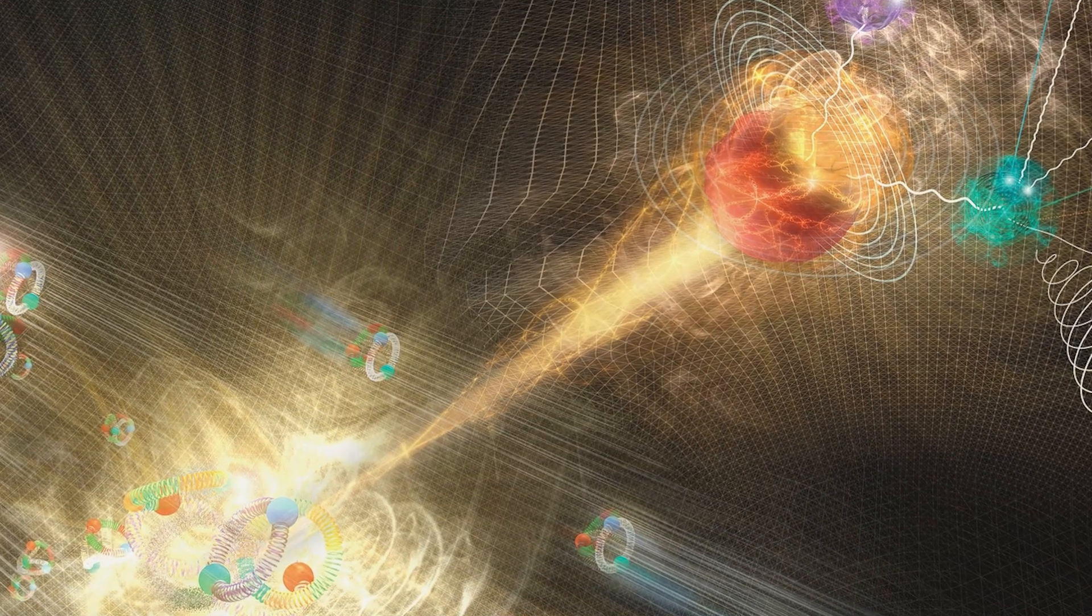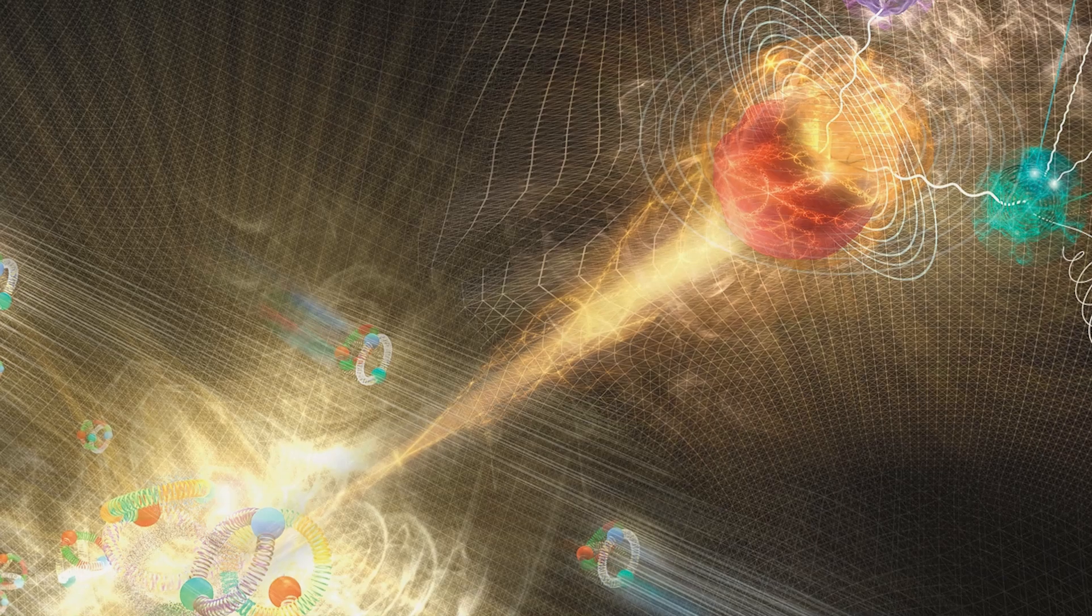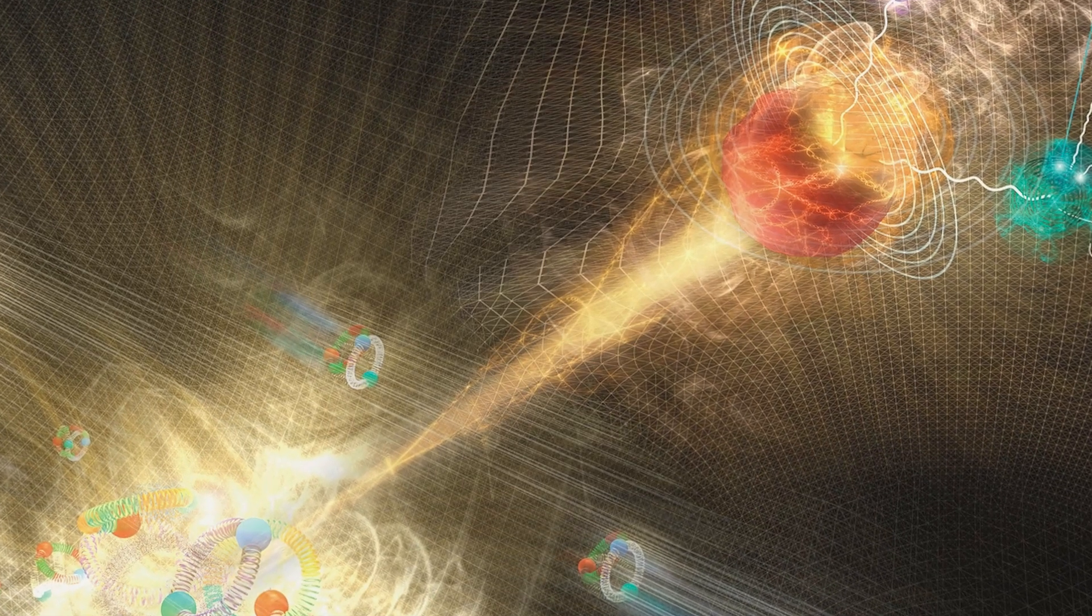In our current description of nature, every particle is a wave in a field. The most familiar example of this is light. Light is simultaneously a wave in the electromagnetic field and a stream of particles called photons.